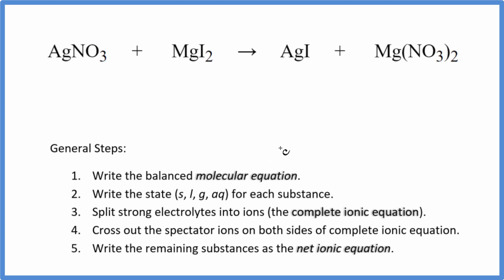The first thing we do when we balance net ionic equations is balance the molecular equation. I can see I have two iodine atoms here and just one here. Let's put a 2 as our coefficient. Now I have two silvers. Looks like we need to put a 2 in front of the AgNO3. We have two silvers. Those are balanced.